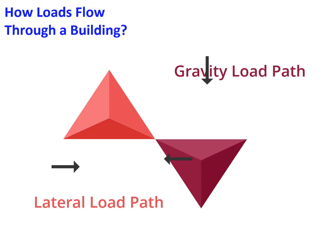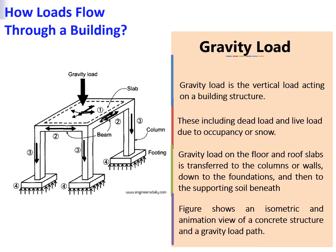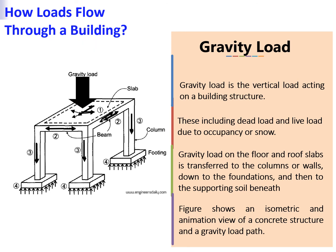Both the gravity and lateral load paths utilize a combination of horizontal and vertical structural components. Gravity load is the vertical load acting on a building structure, including dead load and live load due to occupancy or snow. Gravity load on the floor and roof slabs is transferred to the columns or walls, down to the foundations, and then to the supporting soil beneath. The figure shows an isometric view of a concrete structure and a gravity load path.